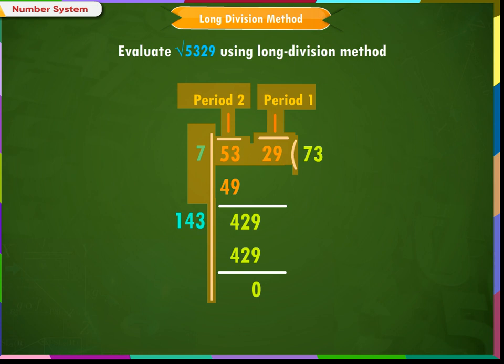Step 2: Think of the largest number whose square is equal to or just less than the first period. Take this number as the divisor and also as the quotient. Consider 53 first — 49 is the nearest square. Step 3: Subtract the product of the divisor and the quotient from the first period and bring down the next period to the right of the remainder. This becomes the new dividend. The divisor is 7 and the balance is 4; bring down 29. So 429 is the new dividend.